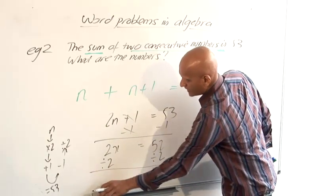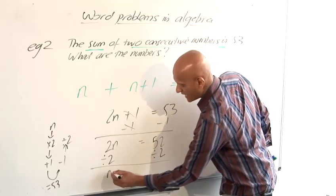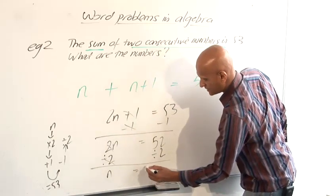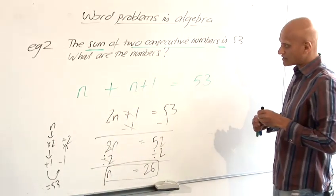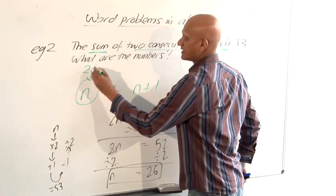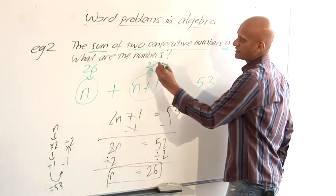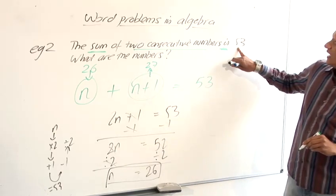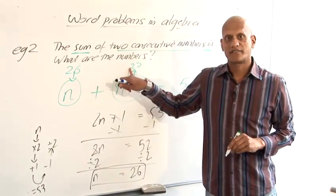And oops that shouldn't have been an x, that should have been an n. Dividing both sides by 2 gives me n is 26. So n is 26. Now n was the first of these numbers. So n was 26. And that means the next number would be n plus 1 is 27. So the two numbers that are consecutive and add together to give me 53 are 26 and 27.